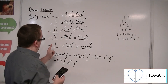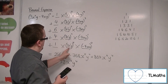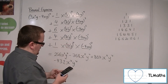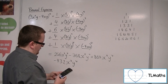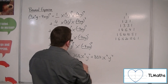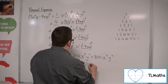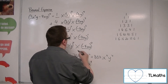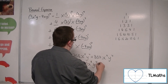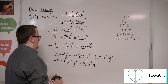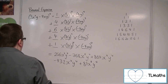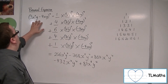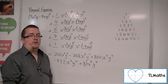Finally, we've got 1 times this to the 4 times that to the 1, which is just 1. So, 3 to the 4 is 81, giving us 81x to the 8, y to the 4. And that is the fully expanded form of 3x squared y minus 4xy, all to the power of 4.